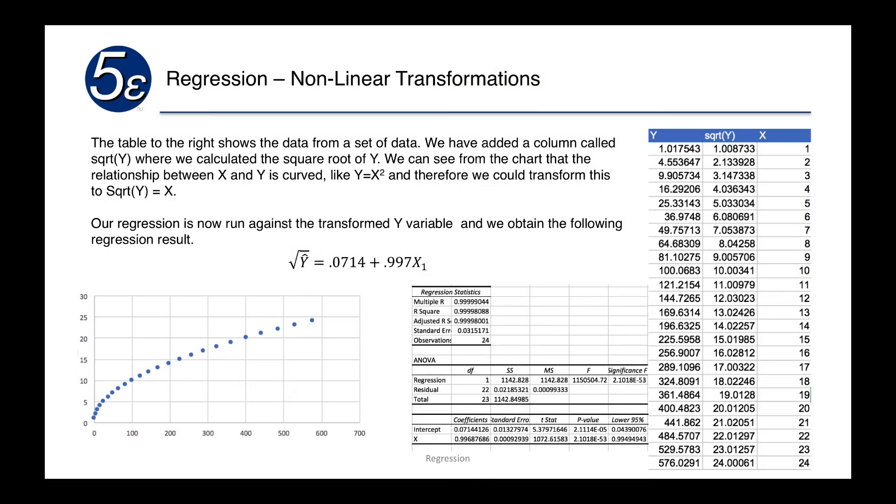The table to the right shows a set of data. We've added a column called the square root of y, where we calculated the square root of y itself. We can see from the chart that the relationship between x and y is definitely curved and it looks like it would be y equals x squared. Therefore, we can transform this variable to the square root of y equals x.